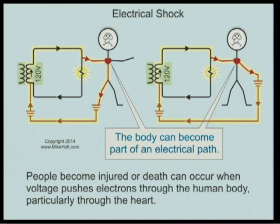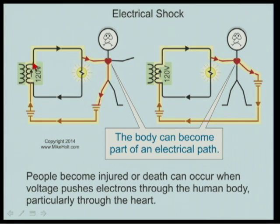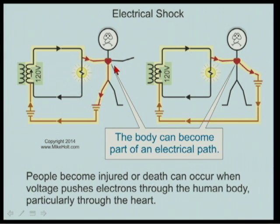Let's go to the next concept: electric shock. We can see the power supply here on the secondary. Current leaves the source and returns to the source. If somebody makes contact with the energized conductor, electrons will leave the source, return to the source through the light bulb, but also travel through the individual - to the foot - getting back to the source. That means there's a parallel path. This person is in parallel with this light.